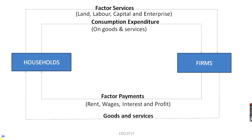Let us understand this through the diagram. In this diagram there are only two sectors of the economy: household and firm, with no interaction from the government or foreign sector. The household sector supplies factor services only to firms, and the firms hire these factor services only from the households. The firms produce goods and services and sell their entire output to the household. In exchange for factor services, households receive factor income and spend the entire income on consumption of goods and services. There are no savings in the economy — neither the household saves from income nor the firm saves from profit.